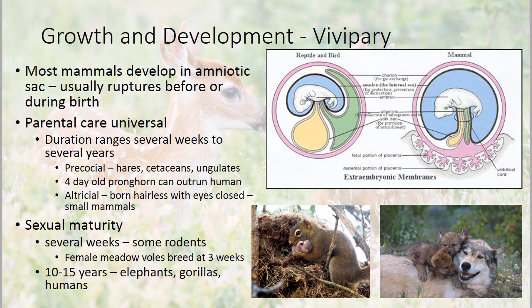For placental mammals, which is most mammals, they develop in an amniotic sac. If you compare the amniotic sac of a placental mammal with a reptile or bird amniotic egg, all the same parts are there, just in a slightly different proportion and layout. The amniotic sac is the fluid the mammal floats in, and it usually ruptures right before or during birth — in humans that's when we say the water breaks.